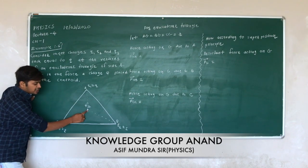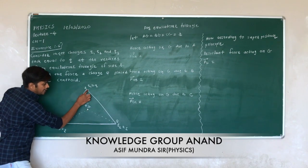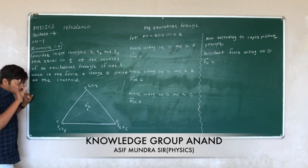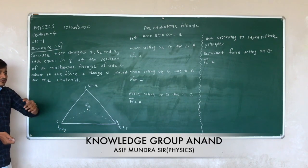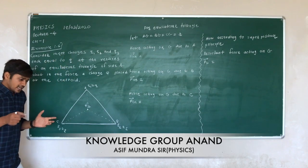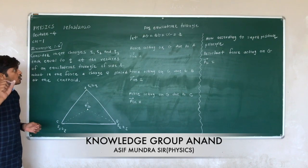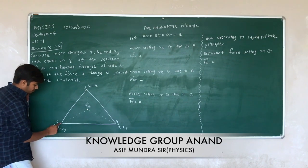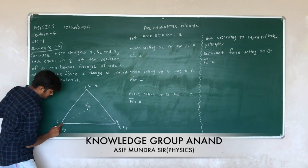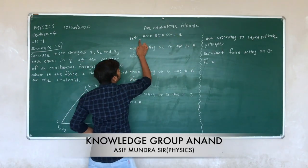The force acting on G is due to the other charges — due to A, due to B, and due to C. According to the superposition principle, first we will find individual forces and then we will add them vectorially. For an equilateral triangle A, B, G, and C, these three distances are the same.